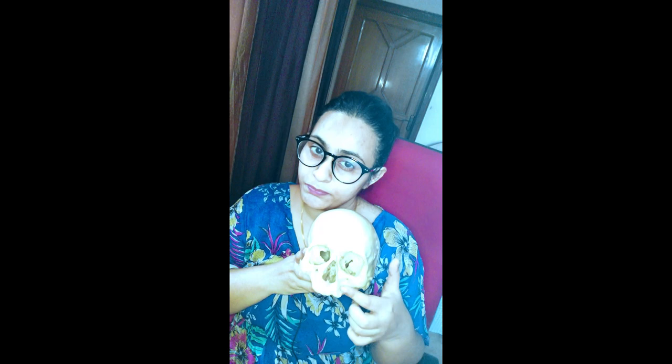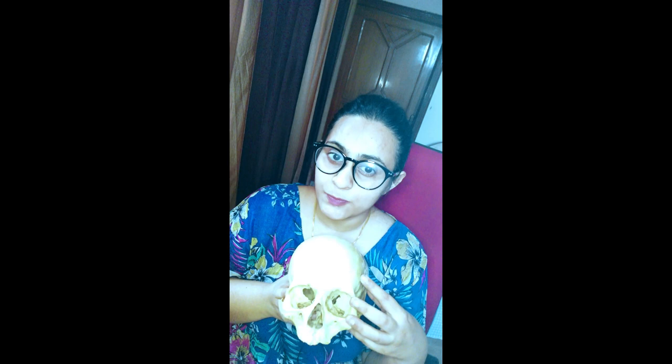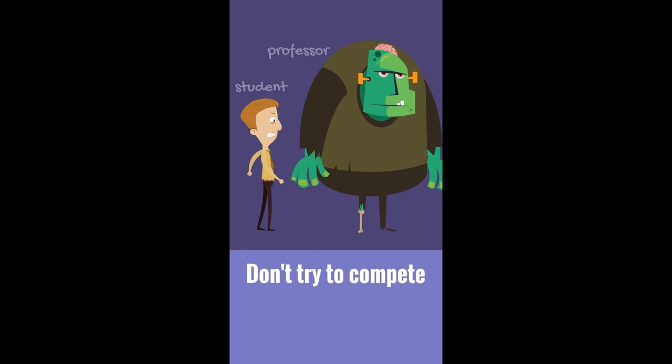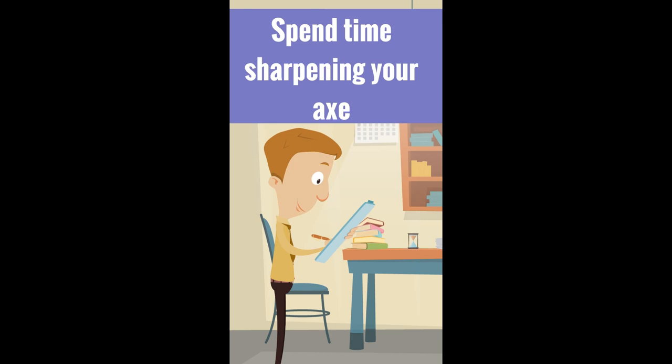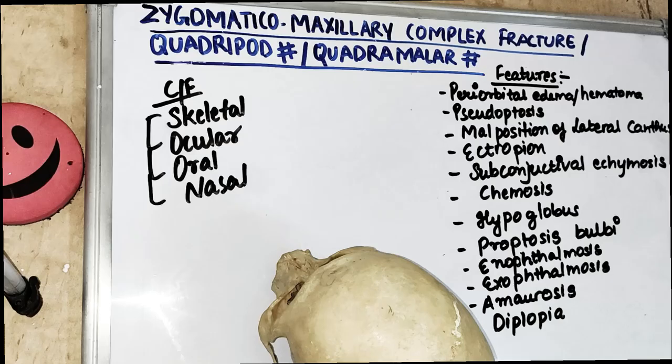We know that zygomatic fracture is not an isolated fracture because the zygomatic process comprises many bones — it has attachment to the maxilla, to the temporal bone, and also to the orbit. We are going to talk about the signs and symptoms and the tests to be run, especially when the patient has double vision, which is diplopia. Before we get started, make sure you subscribe to our channel and click on the bell icon so you don't miss any future videos.